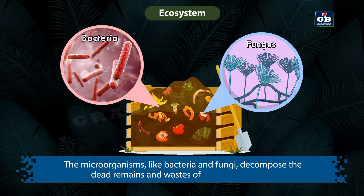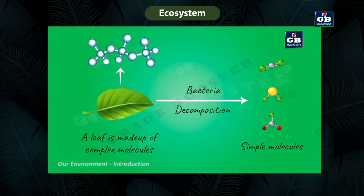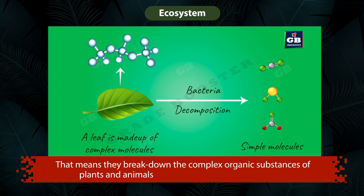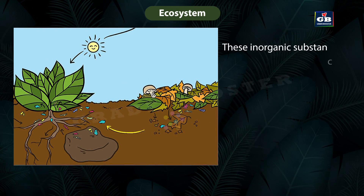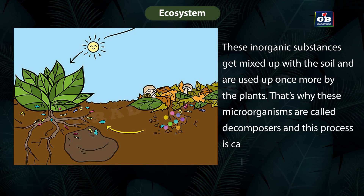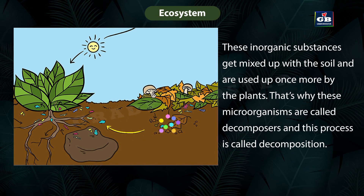Herbivores, carnivores, and omnivores together are called consumers. Microorganisms like bacteria and fungi decompose the dead remains and wastes of plants and animals — they break down complex organic substances into simple inorganic substances. These inorganic substances get mixed with the soil and are used once more by plants.